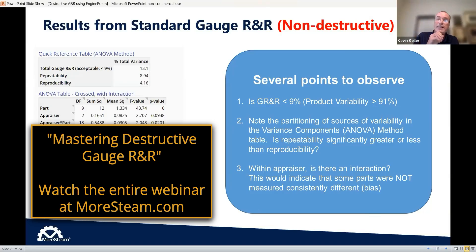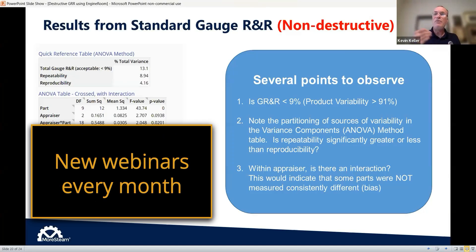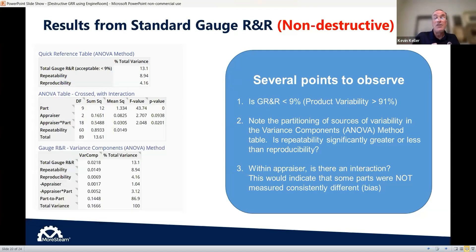So let's look real quickly at a standard gauge R&R study and see what's really important. So then when we go to a destructive, we can see what's missing. So there's three things that I really look at when I see these statistics.